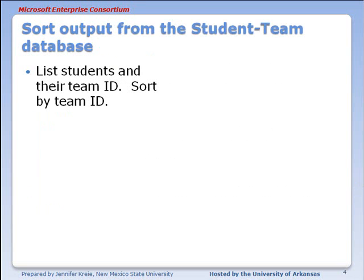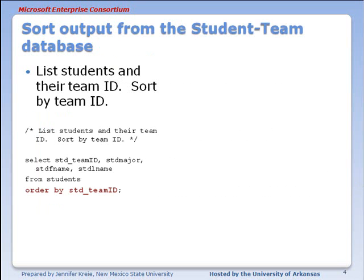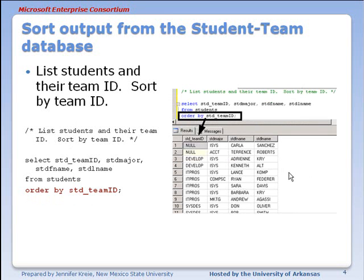Let's look at an example - sort output where we list students in their team ID and sort by team ID. We construct our SQL statement with the SELECT clause and the columns to display, the table to get the data from, then we say ORDER BY and list a field we want to sort by. When we run that in SQL Server Management Studio, this is the output we would see. Null has no value and it sorts at the top of the list because the word null doesn't actually appear in the data, so null values will appear at the top of the list.